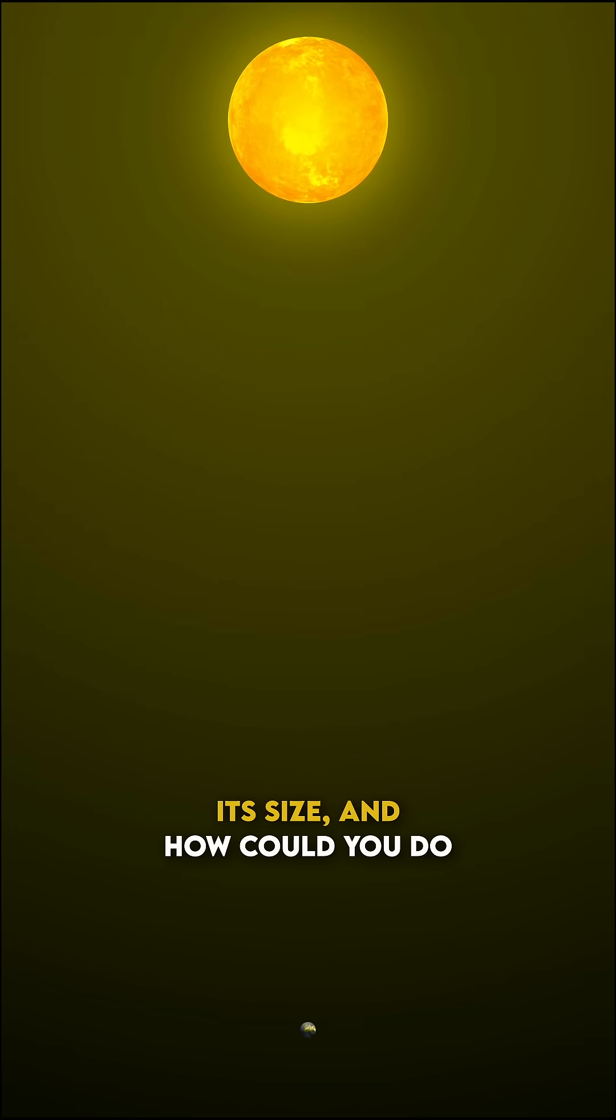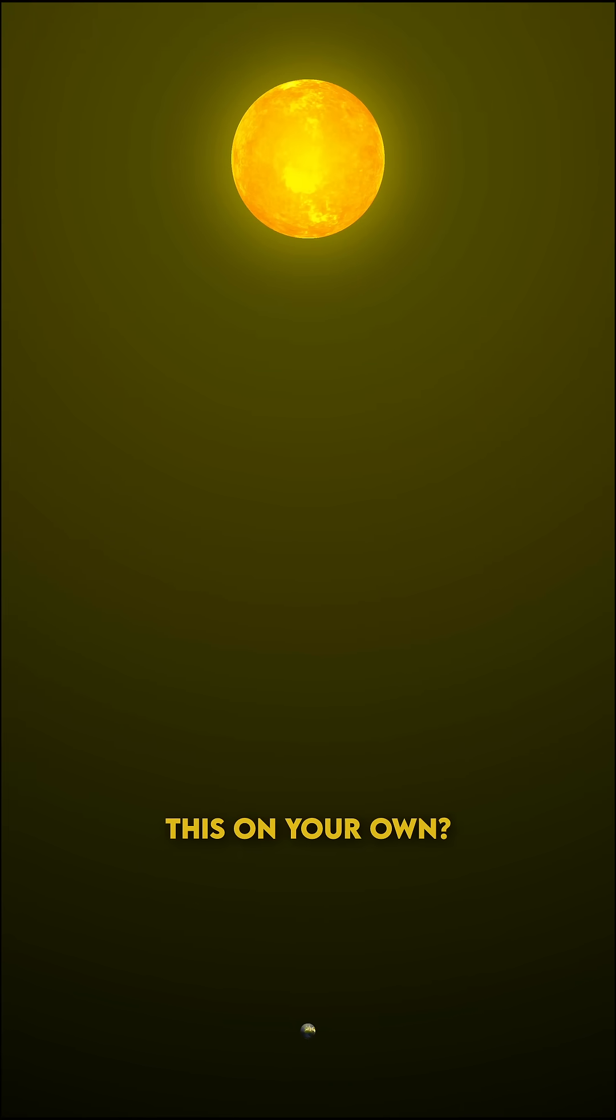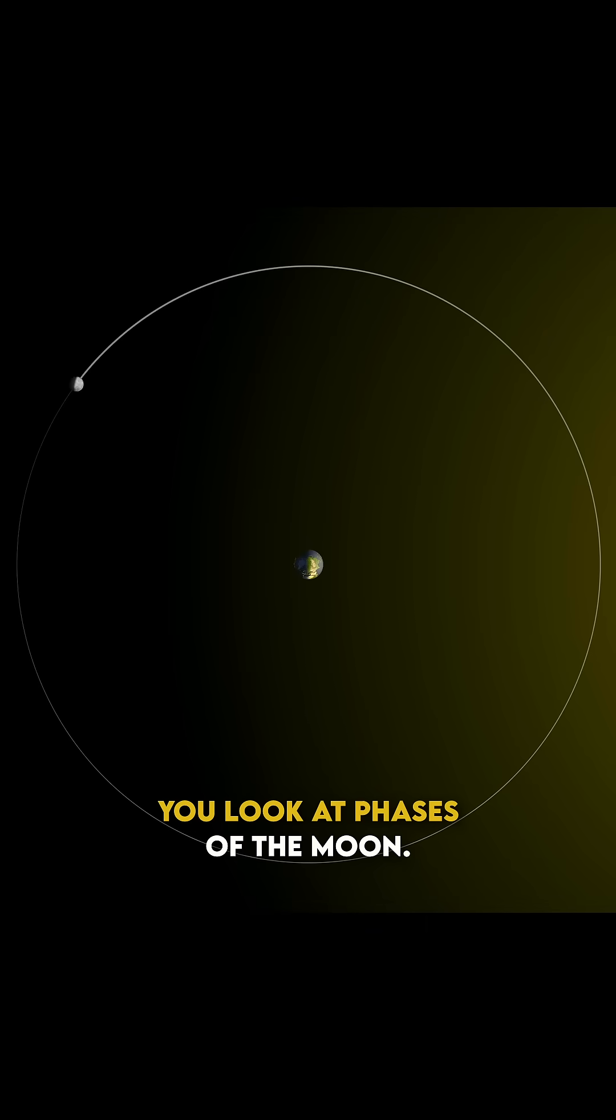How could ancient Greeks figure out the distance to the sun without knowing its size, and how could you do this on your own? You again use the moon. You look at phases of the moon.